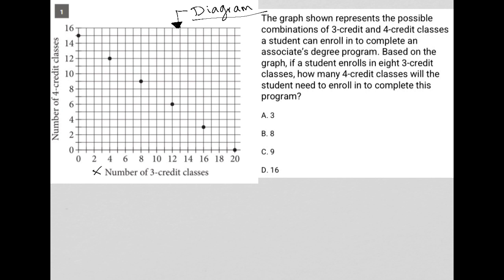The x-axis here is number of three-credit classes. The y-axis, vertically, is number of four-credit classes. Let's see what the question is actually asking.